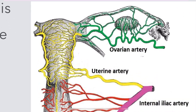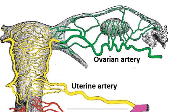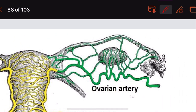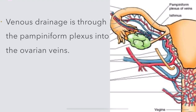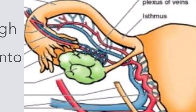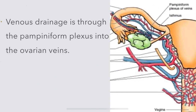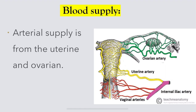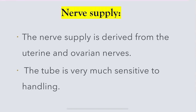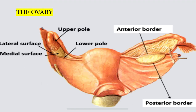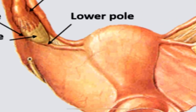Blood supply of the fallopian tube: supplied by uterine and ovarian arteries. Venous drainage is through the pampiniform plexus into the ovarian veins. Nerve supply is derived from uterine and ovarian nerves; the tube is very sensitive to handling.